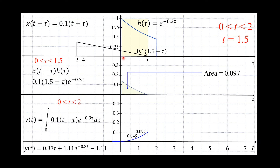The limit of integration will be where they overlap, shown in yellow — a rectangle overlapping from 0 to t. If you carry out this integration, you get the output y(t). If I want to know the output at t=1.5, I plug in t=1.5 and get a value equal to 0.097. This is the output at 1.5. Multiplying the two functions gives a curve, and integrating gives the area of 0.097.